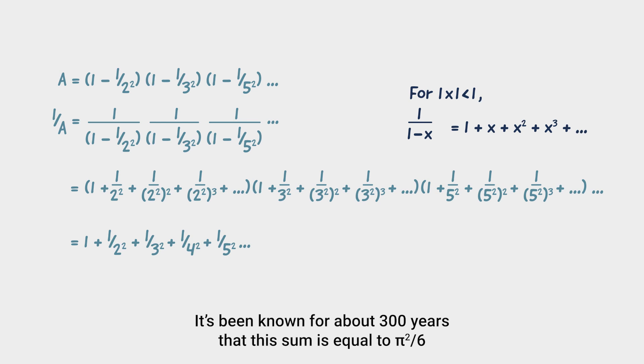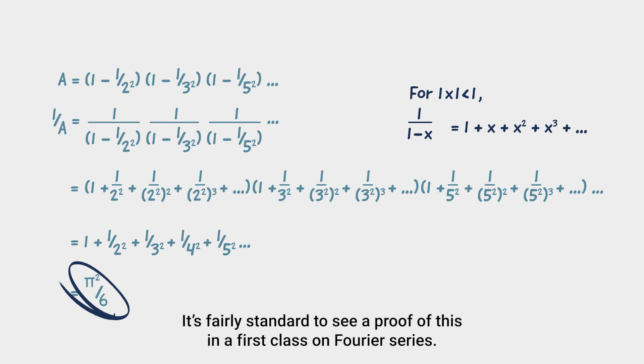It's been known for about 300 years that this sum is equal to pi squared on 6. You might know this result as the Basel problem. It's fairly standard to see a proof of this in a first class on Fourier series.